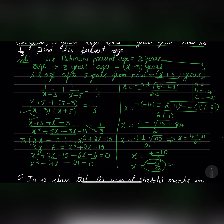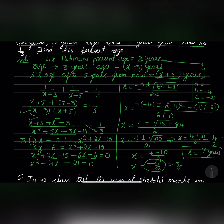So x equals 4 minus 10 over 2 equals minus 6 over 2 equals minus 3, which is ruled out because age cannot be negative. Therefore Rahman's present age is 4 plus 10 over 2, which is 14 over 2, so x equals 7 years. Rahman's present age is 7 years.